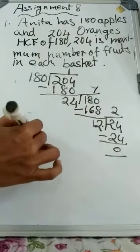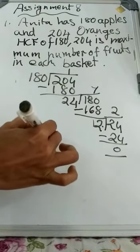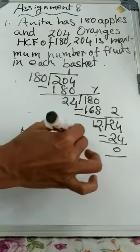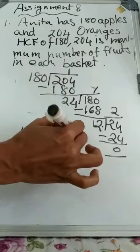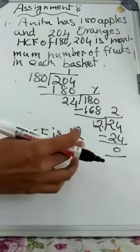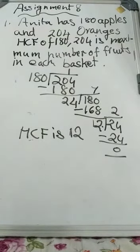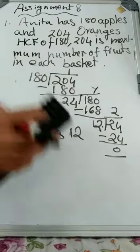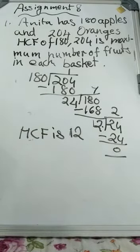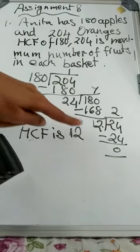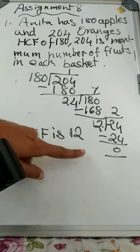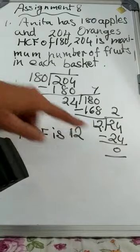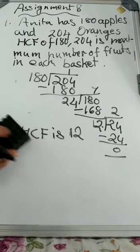So what will be the HCF? The HCF is the last divisor. What is it? 12. That means you can pack 12 apples in each basket like that. Division method — you understood, right? So you got the HCF as the last divisor. HCF is 12.